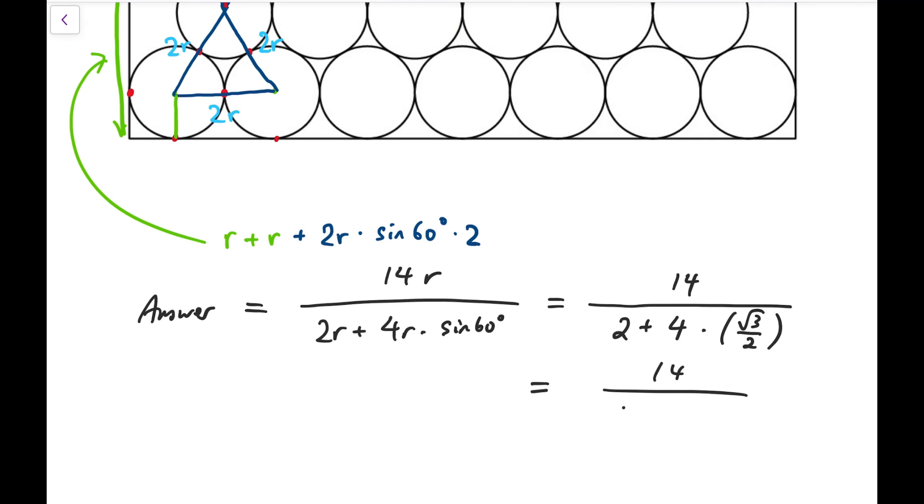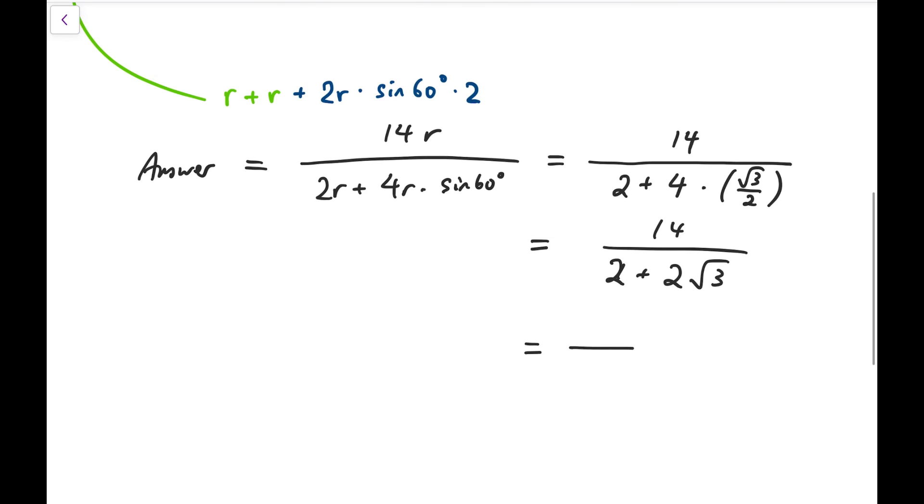So simplify that. It's 14 over 2 plus 2 root 3. And that's 7 over root 3 plus 1.